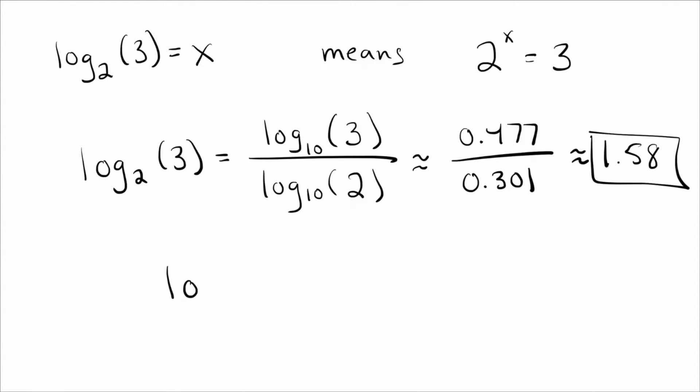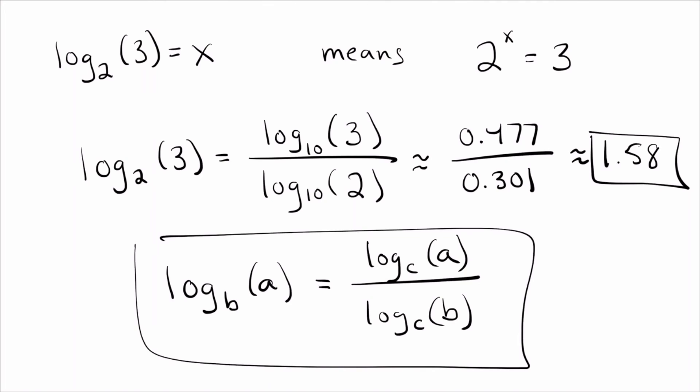So what the general formula says is suppose you have log base b of a for some base b that you don't want. So you can rewrite this as two logs just like before. On the top you put what was inside the old log, so an a. On the bottom you put the old base, which is a b. And remember we can make these any new base we want, so we call that c for any new c that we want. And there you go, that is the change of base formula.